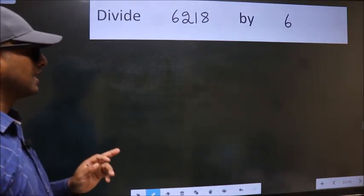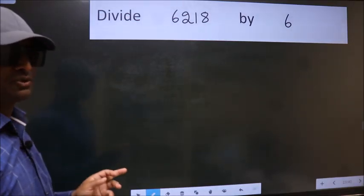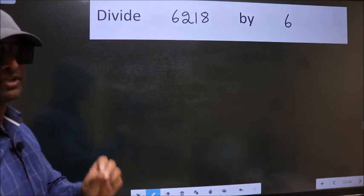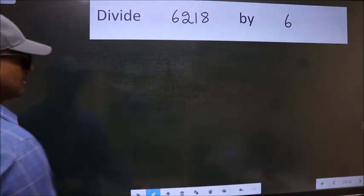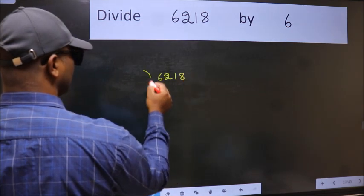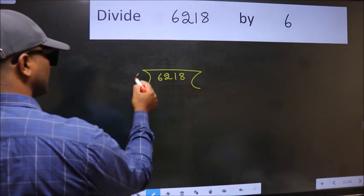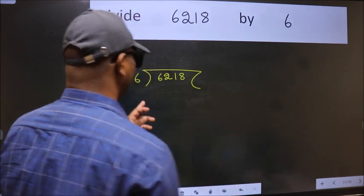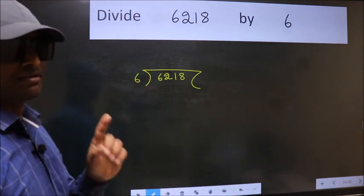Divide 6218 by 6. To do this division, we should frame it in this way. 6218 here, 6 here. This is your step 1.